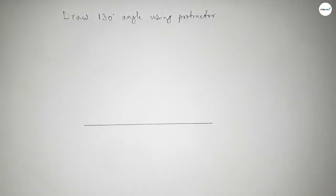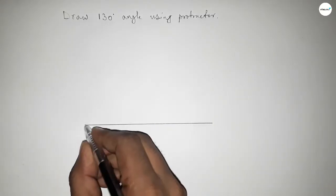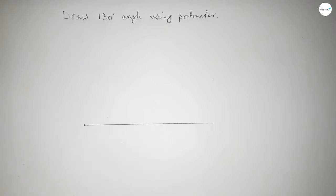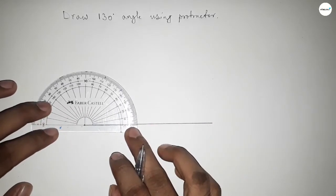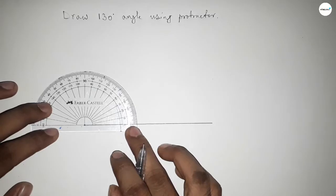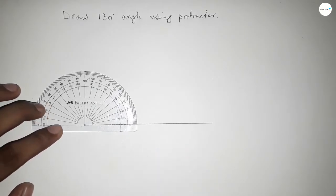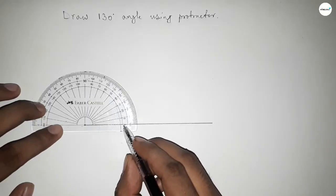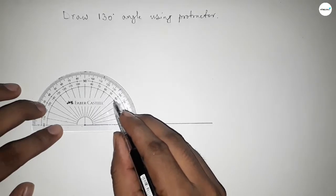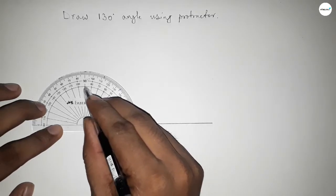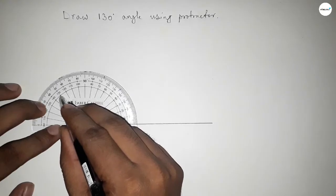Next, mark a point here to draw the 130-degree angle. Now put the protractor on the line perfectly. Now counting the angle: starting 0, 10, 20, 30, 40, 50, 60, 70, 80, 90, 100, 110, and 120.